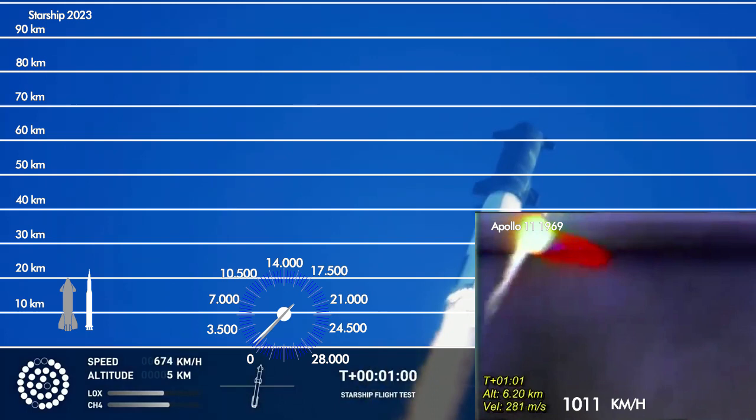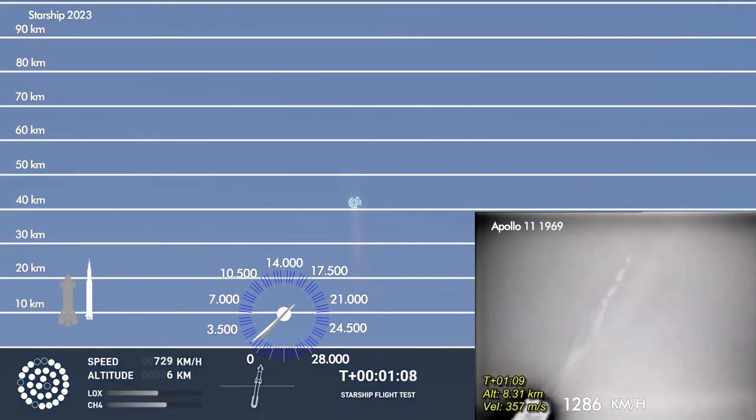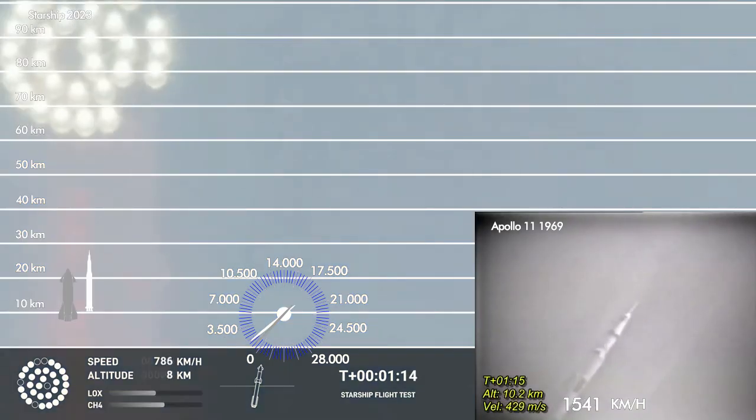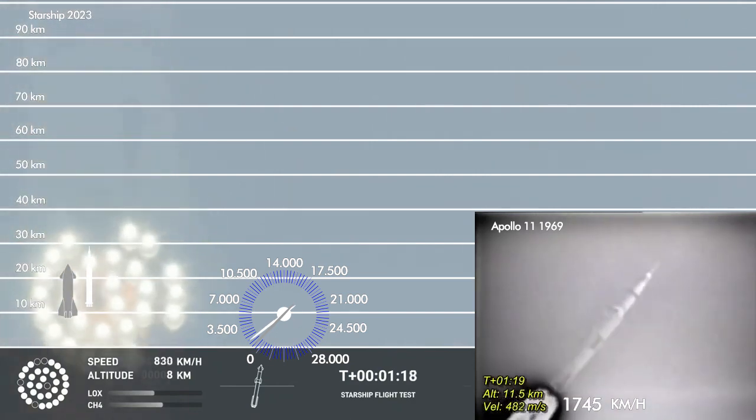We're throttled down and throttled back up, going through the period of maximum aerodynamic pressure. As the velocity increases, the density of the atmosphere is decreasing.